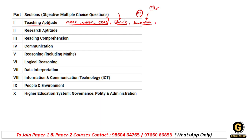Learners characteristics ke alawa yahan par puche gaye hain models of teaching. Teaching ke kitne models hain, iske bhi detailed video humne discuss ki hai - agar aapne nahin dekhi hai toh mujhe jaldi comment kar dijiye, main link aapke saath share kar dungi. Models of teaching ek bahut important topic hai. Iske baad yahan aata hai higher order learning, jismein aata hai aapka cognitive learning. Cognitive learning ke andar higher order learning hai, usse related yahan par ek basic question pucha gaya tha.